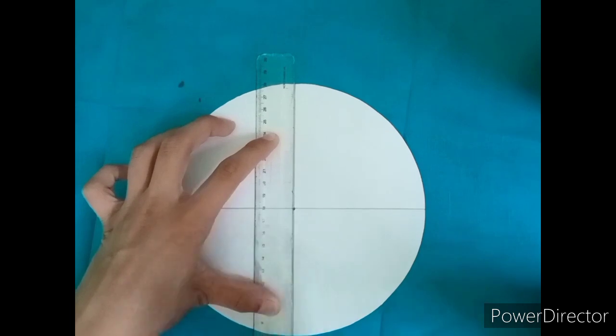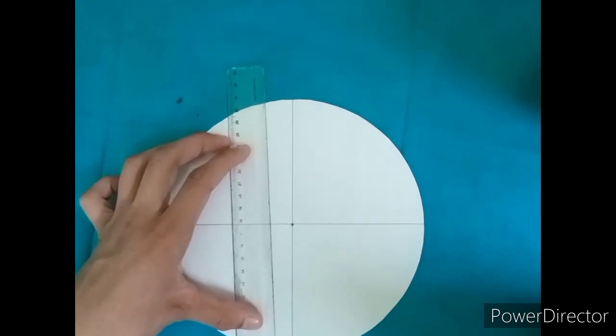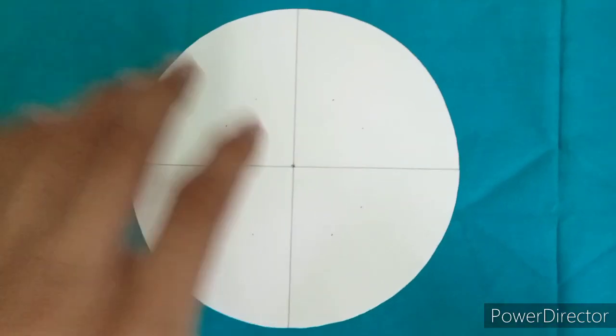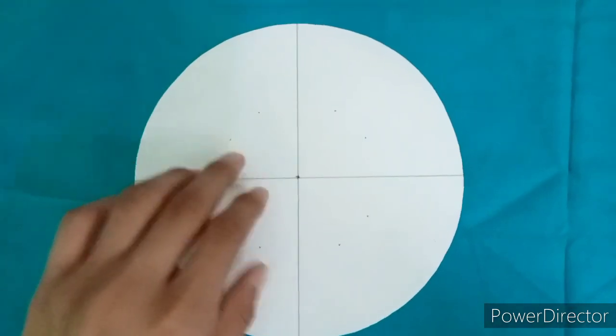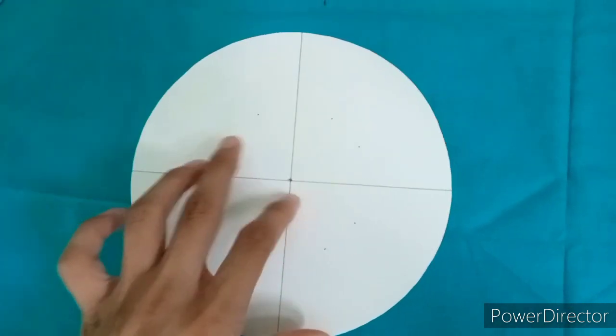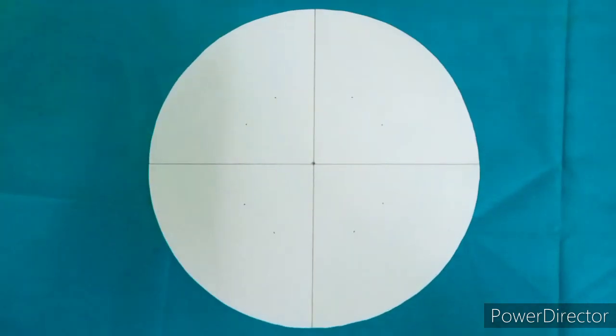Then we have to write the numbers. As you all can see that I have divided each part of the circle in three equal parts. Now I will be joining all the points together to form lines.